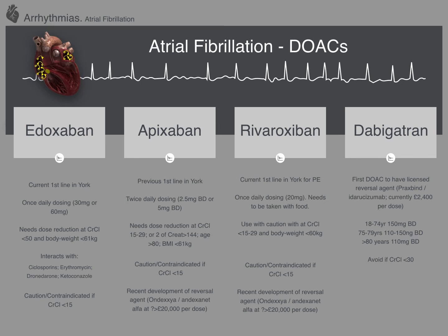Something we really need to think about with DOACs is renal function — these are all largely excreted renally. We need to check creatinine clearance; we often run on an estimated eGFR, but really all the guidelines and evidence are based on creatinine clearance, so we should be calculating this properly with the Cockcroft-Gault equation. Edoxaban needs a dose reduction at a much higher creatinine clearance threshold, whereas Apixaban you don't dose-reduce until creatinine clearance gets below 30.